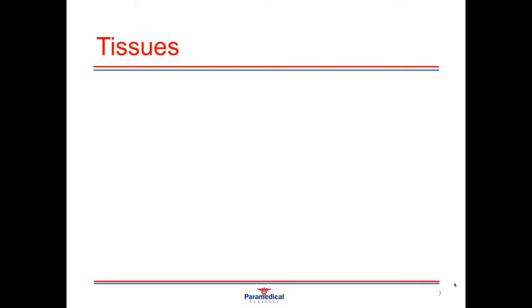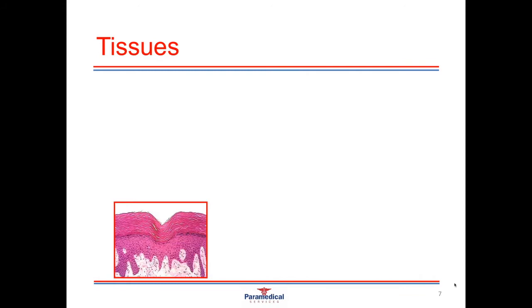As our cells group together and start performing a specialized function, they form what's called tissues. One of the first is epithelial tissue. This is the kind of tissue that covers all the body's surfaces on the outside, and on the inside too, where it's called endothelial tissue. This is one of the body's first line defenses, as it protects the outside and inside of the body from pathogenic agents moving into and out of the body.